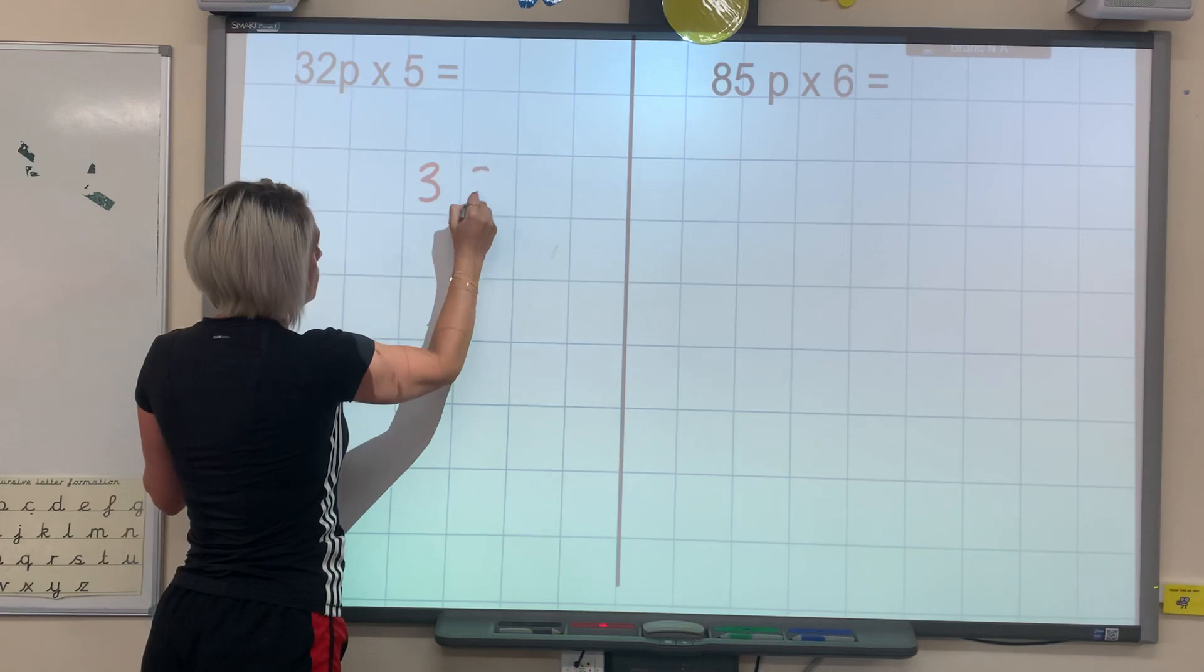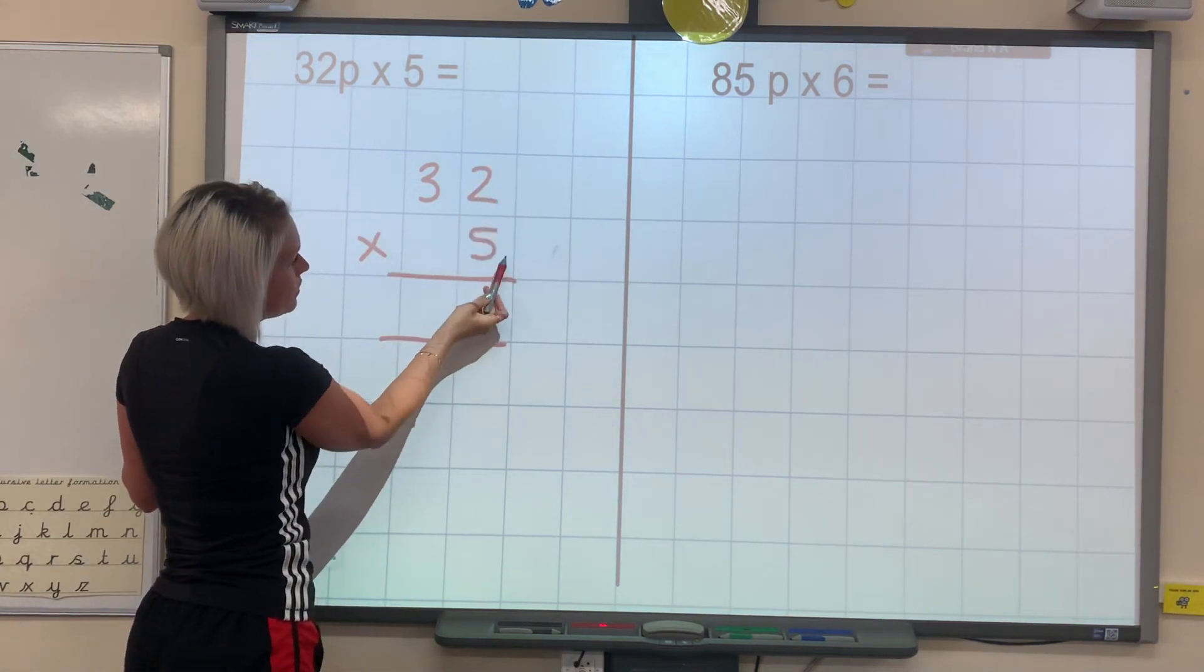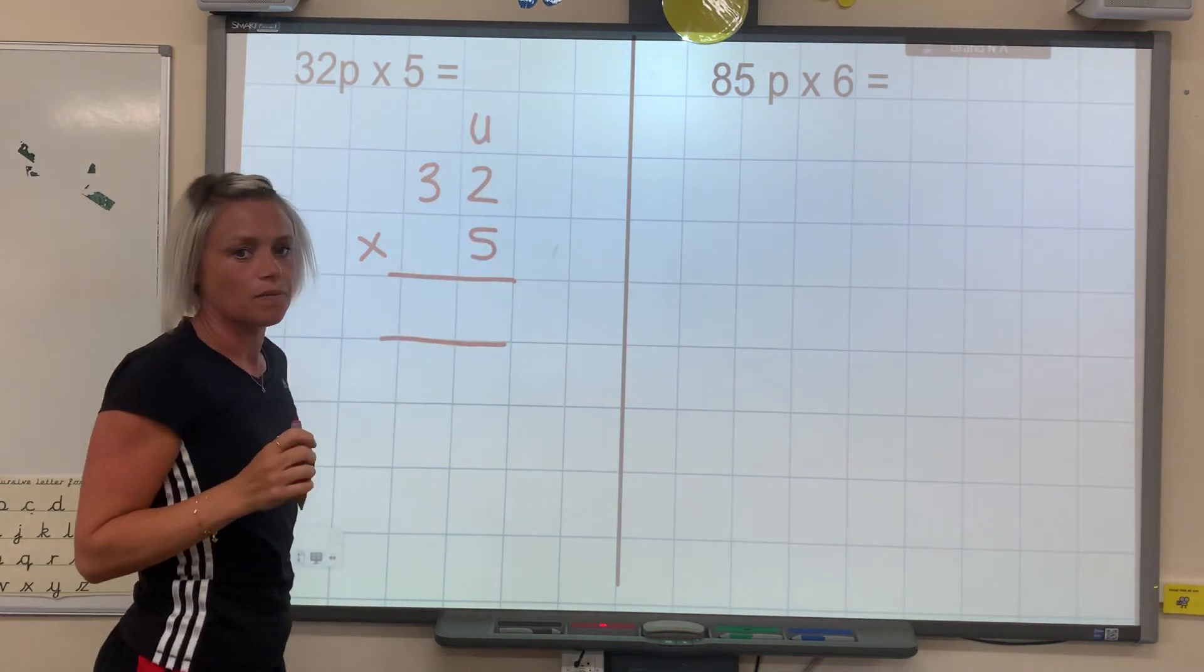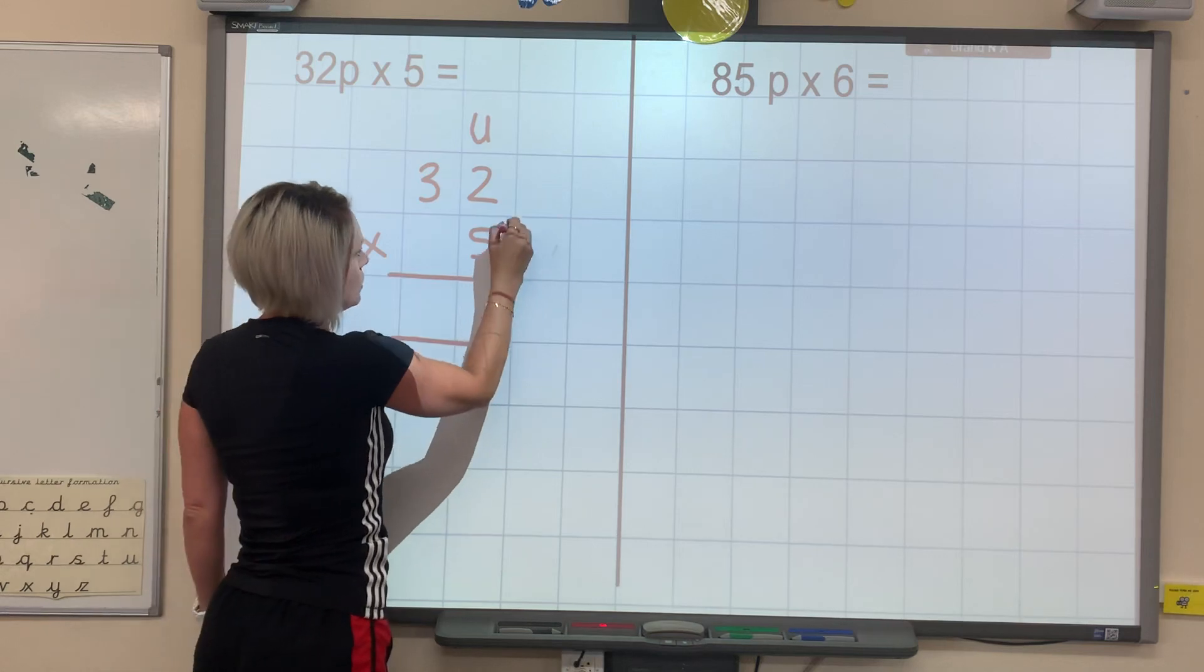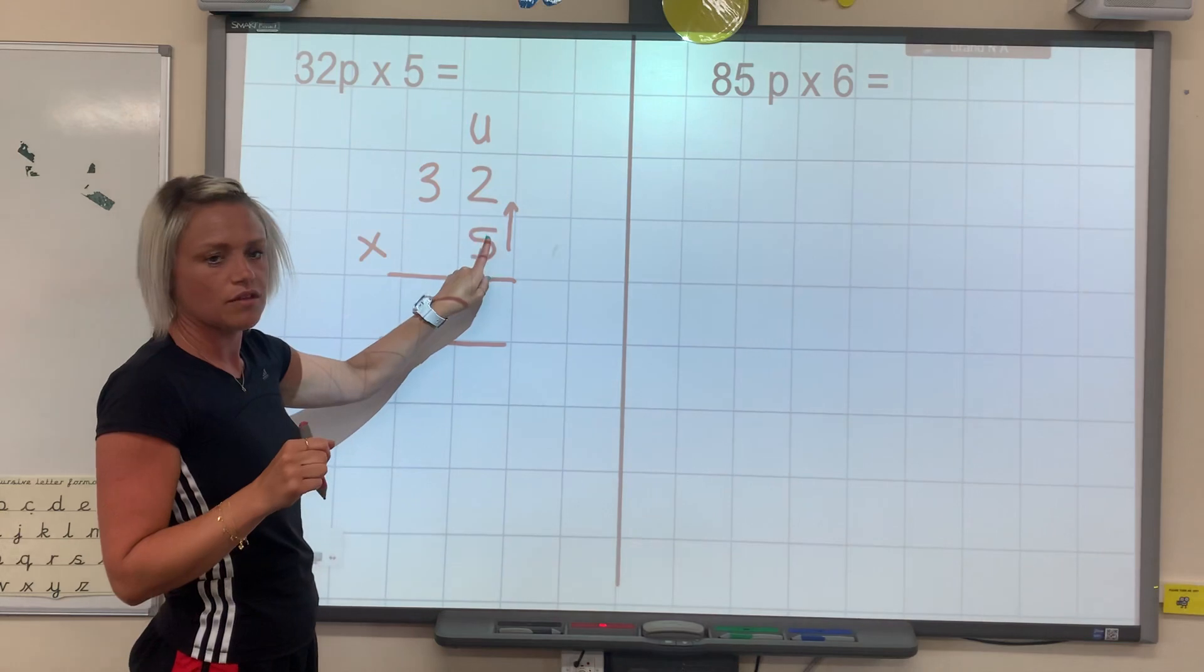So 32 pence times 5. Remember, your 5, or your digit you multiply by, always goes in your unit column. So the first thing we do, if you've forgotten, we multiply the unit with the 5.